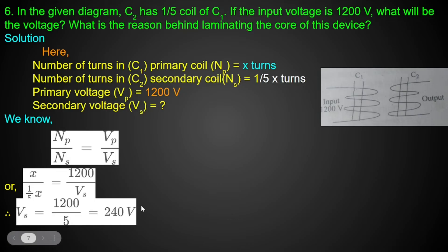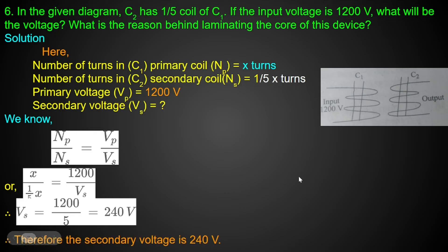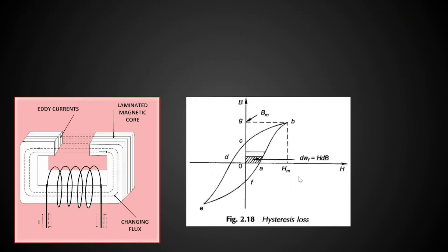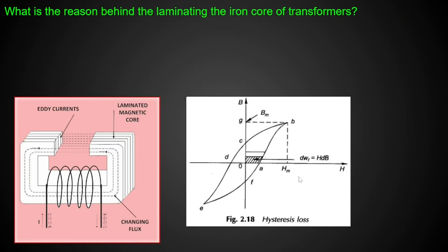The primary voltage is 1200 volts, which is the larger value. The secondary voltage is 240 volts. So this is a step-down transformer.